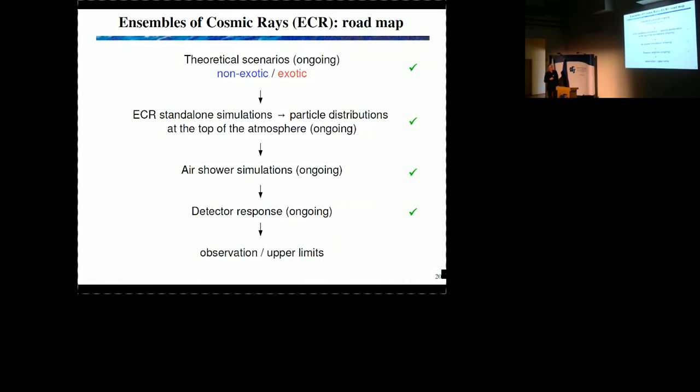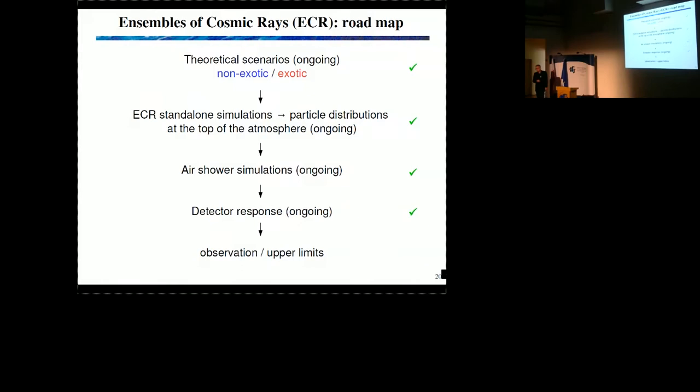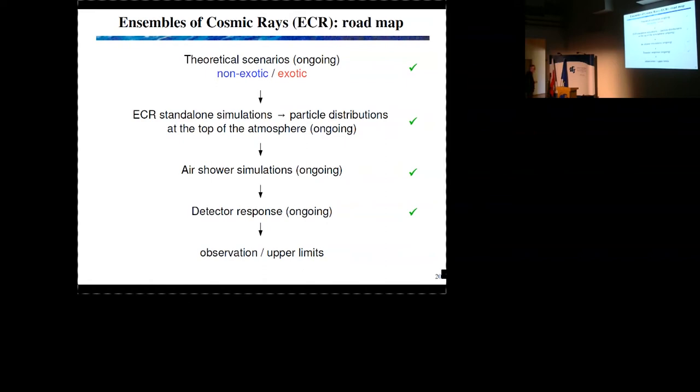And the approach, when we realize that the approach is to look for more than one primary particles, defines a very easily understandable roadmap. So we can consider theoretical scenarios that gives us these cascades. We do, then, simulations. Particle distributions at the top of the atmosphere. Then we do air shower simulations. Then we ask for detector response. Different detectors, of course, are possible. And then we either observe or place upper limits. So in any case, you are good. We publish. We move on with understanding of the universe. Because this is new. Observation or non-observation is a result.